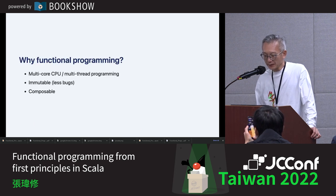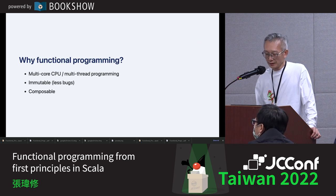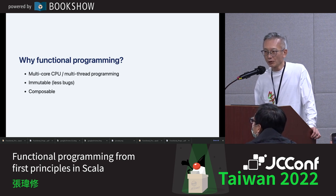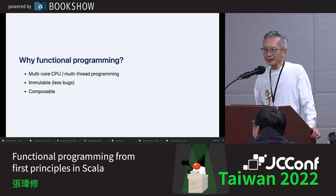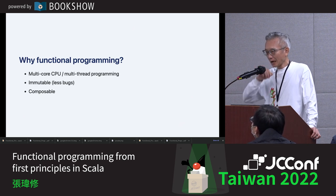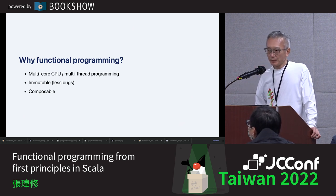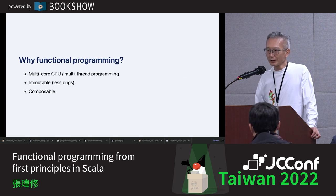Why functional programming? The important thing is that we are in a multi-core world. Multi-thread programming is everywhere, and it is the biggest problem we face. We have data races and concurrency problems. Functional programming is the best way to solve these concurrency problems. You don't need to change variables — you don't have mutable variables, you don't change variables.